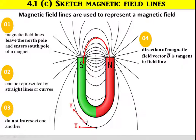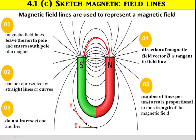You can see here the direction of the magnetic field — the vector B is tangent to the field line. The number of lines per unit area is proportional to the strength of the magnetic field. For the lines that are close together, it is a stronger magnetic field.